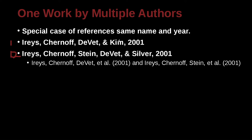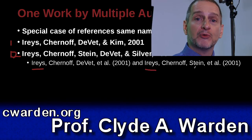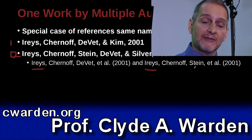Let's see how we would cite that inside of our research paper. So here we have Iries, Chernoff, Yvette, et al, and Iries, Chernoff, Stein, et al. These have multiple authors, so we should be able to use et al the second or more times in our paper — not the first time. The first time, remember, we need to write out everybody, but the second and after time. However, if we just wrote Iries et al and then here wrote Iries et al, then these two papers would look the same, and the reader would not know which paper is which.